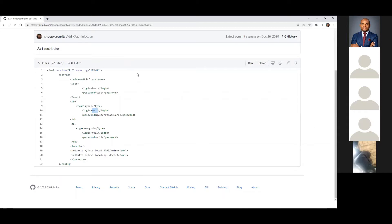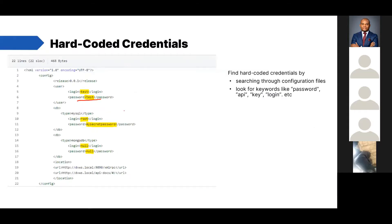Three things jump out here. First, the issue of hard-coded credentials. Second, weak credentials. Third, the fact that root is being used by the application to access the database. Every auditor should know this: using the principle of least privilege, you give the application just the right amount of access to the database. Apart from 'password', you can also search for 'api', 'key', 'login', 'root', or 'admin' — all these can help point out hard-coded credentials.